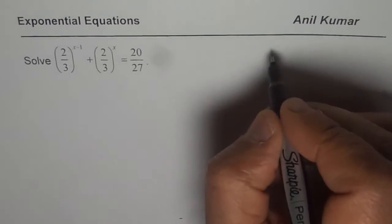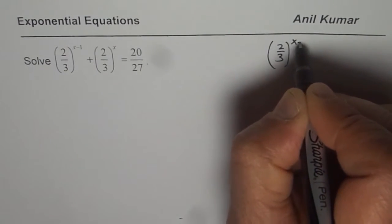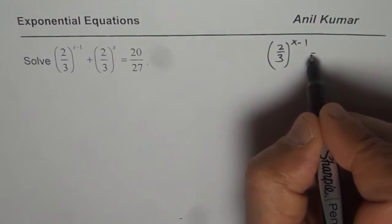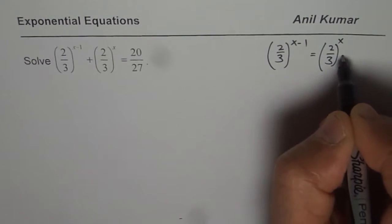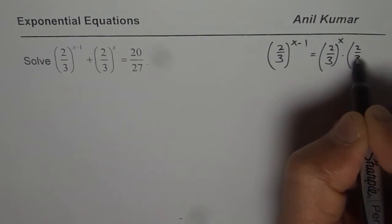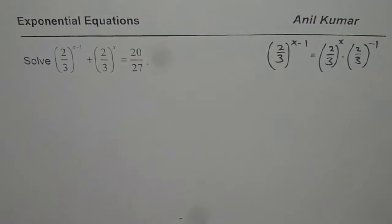First, let us understand the meaning of 2 over 3 to the power of x minus 1. It really means that it is 2 over 3 to the power of x times 2 over 3 to the power of minus 1. So when you add them, you get x minus 1, correct?